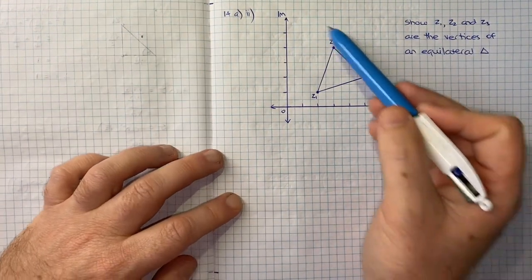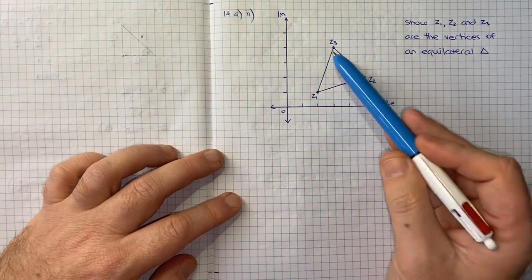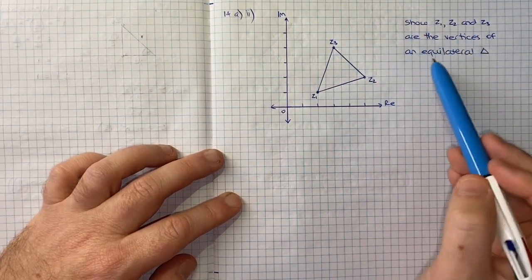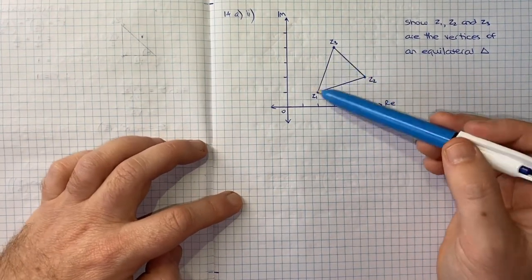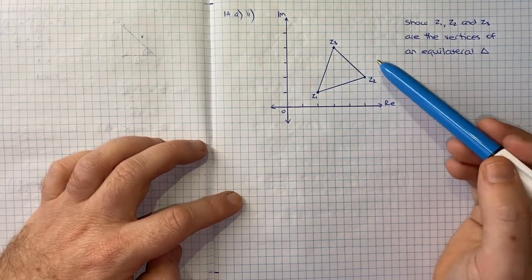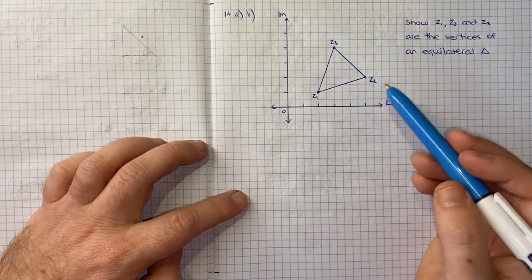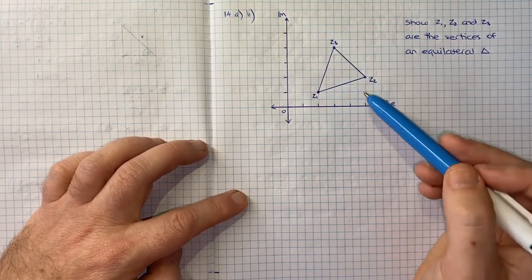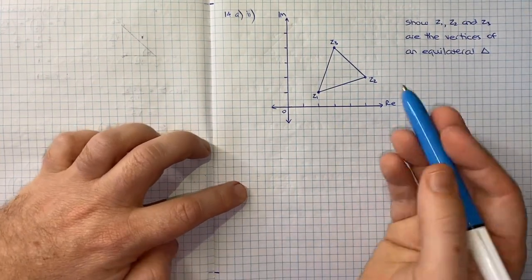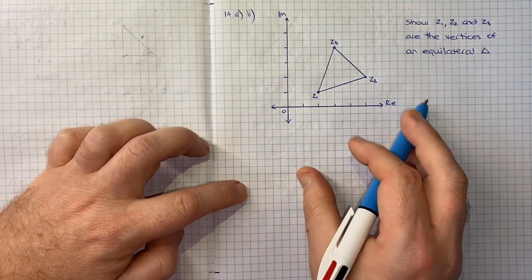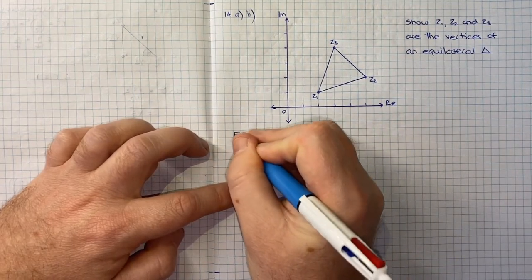So I've recreated our Argand plane here with our three points and what we're being asked to show. And of the two choices, in terms of showing that all the sides are equal or all the angles, I think it's easier to show that all our interior angles are equal to get to our conclusion. And the word hence is the real hint here. We're going to use our results from part 1.